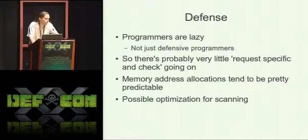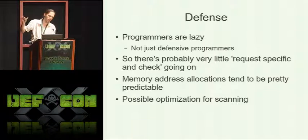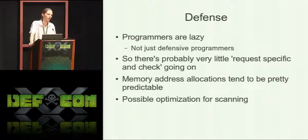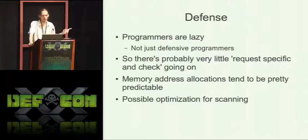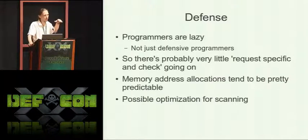There's very little request-specific checking going on with most exploitation frameworks. Most of them are just saying, when I want to inject, I'm going to request that you allocate a certain size and get contiguous pages in memory, and the base of those pages tends to be pretty sequential. So if you wanted to optimize your scanning for where reflectively injected DLLs might be, one way defensively would be to intentionally insert yourself into another process, see where the allocation happens, and work backwards from there so you're not scanning all of memory all the time.